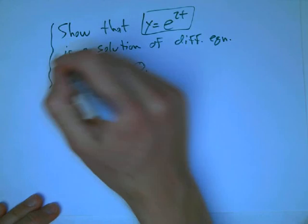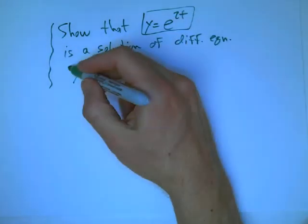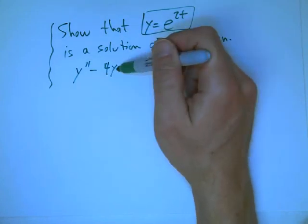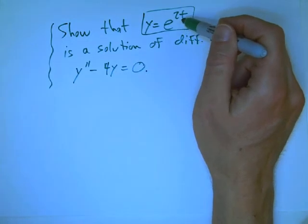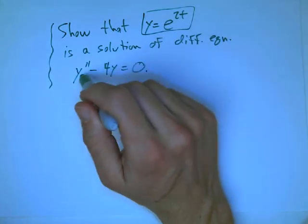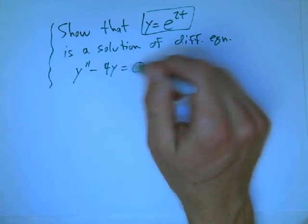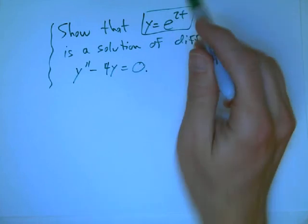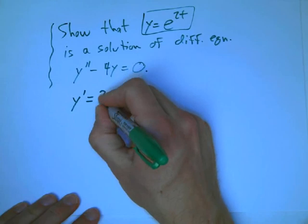All we're trying to do here is get used to the idea of what it even means for a function to solve a differential equation. It means that this statement about the derivatives, this relation about the derivatives, is a true fact for this function. It's probably not going to be true for almost any function. If I take a random function, it's not going to be true that its second derivative minus 4 times what you started with is 0. That's a very special fact to be true about a function. This is claiming that that's going to be true about e to the 2t. All we have to do is plug in.